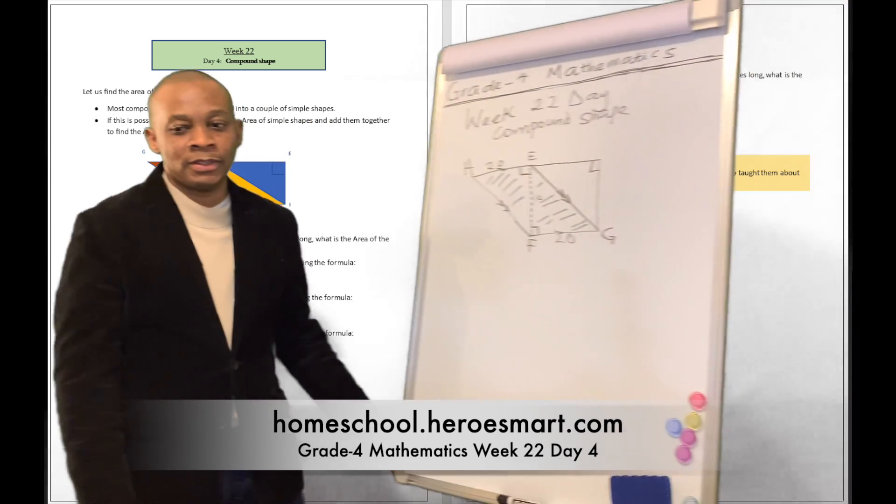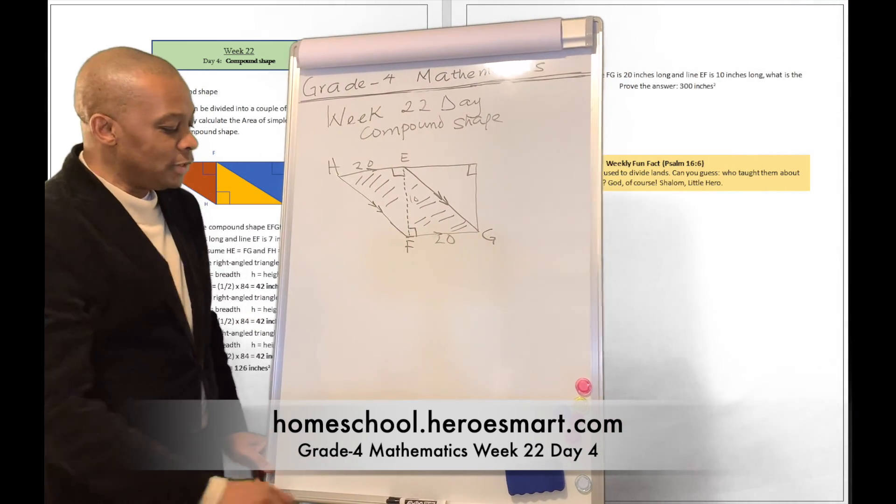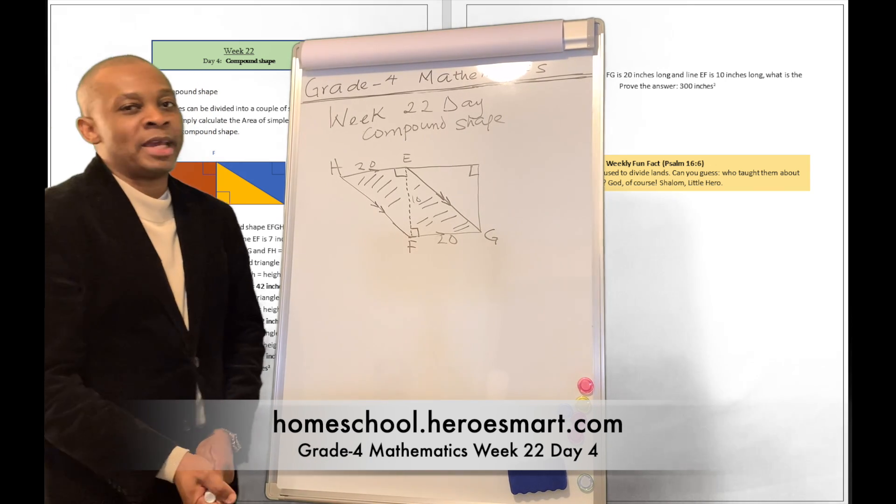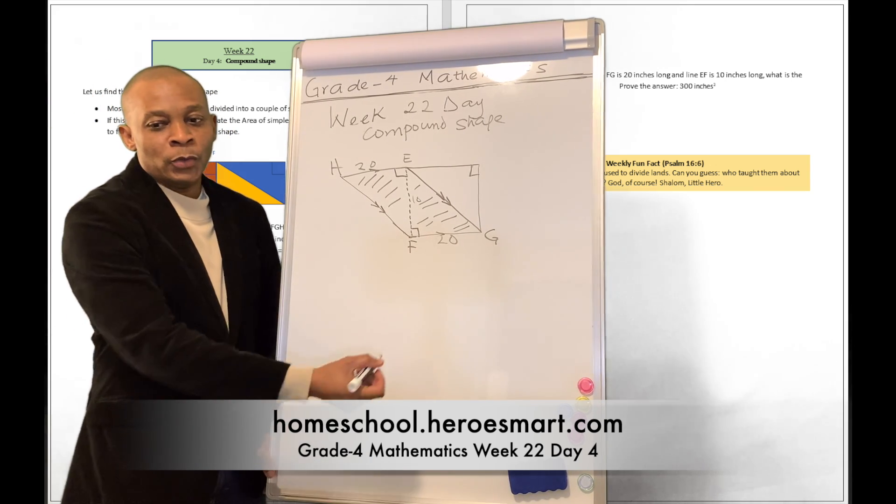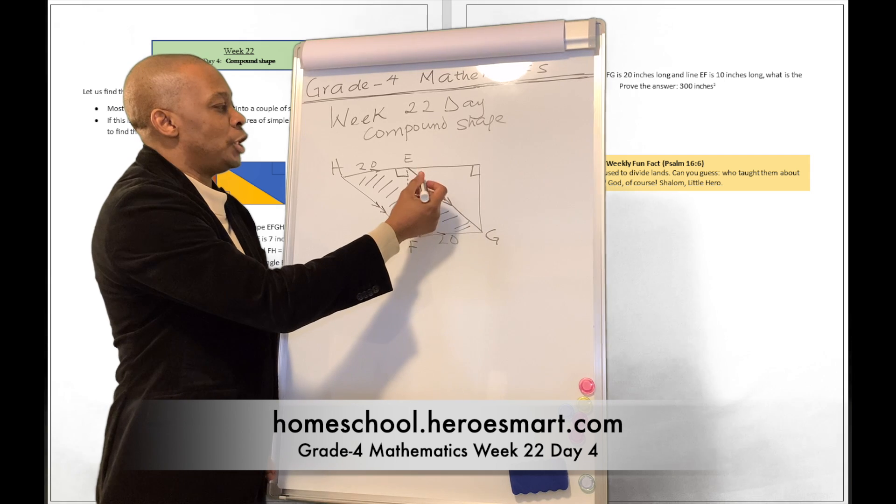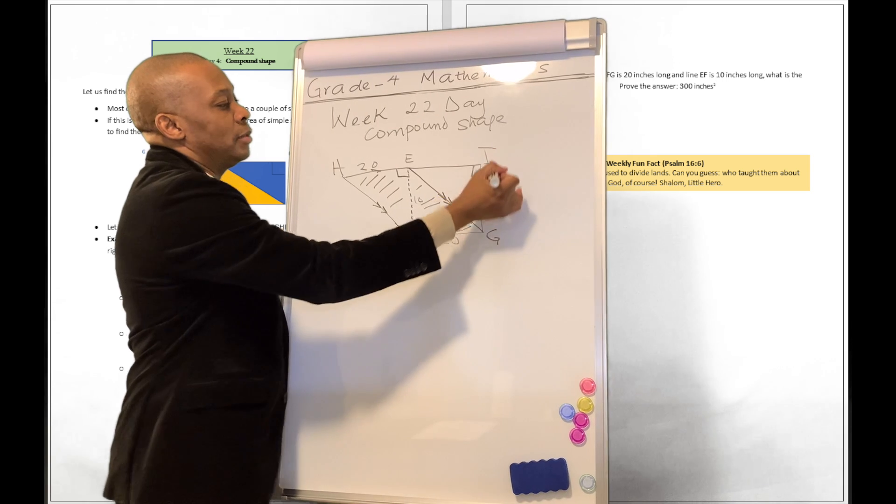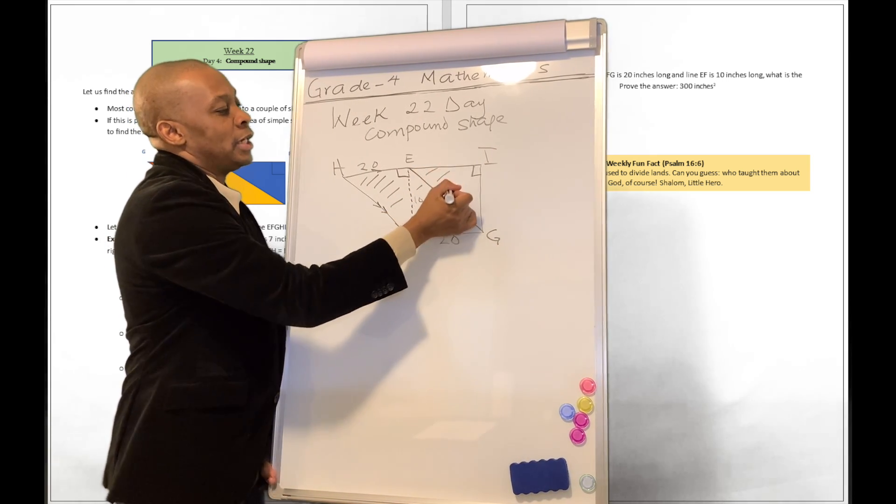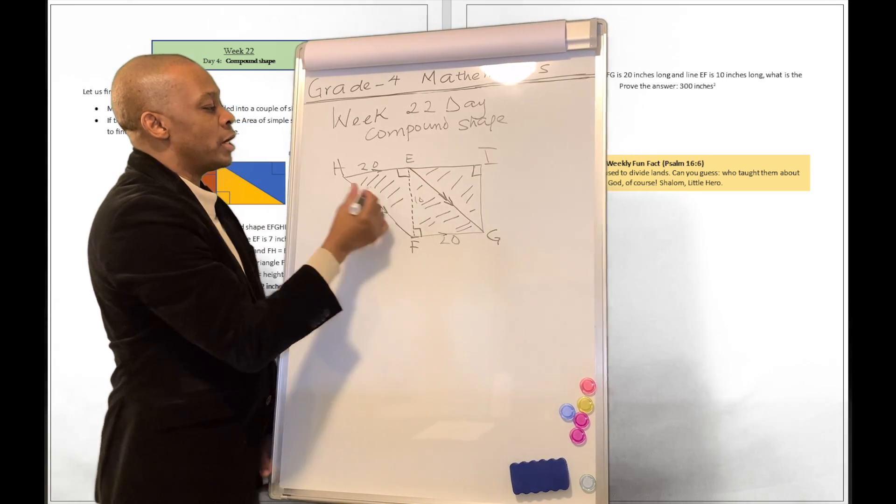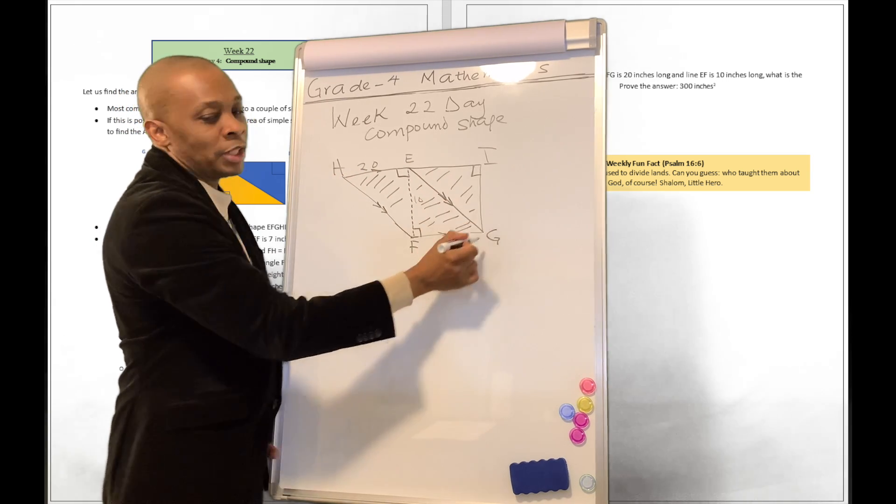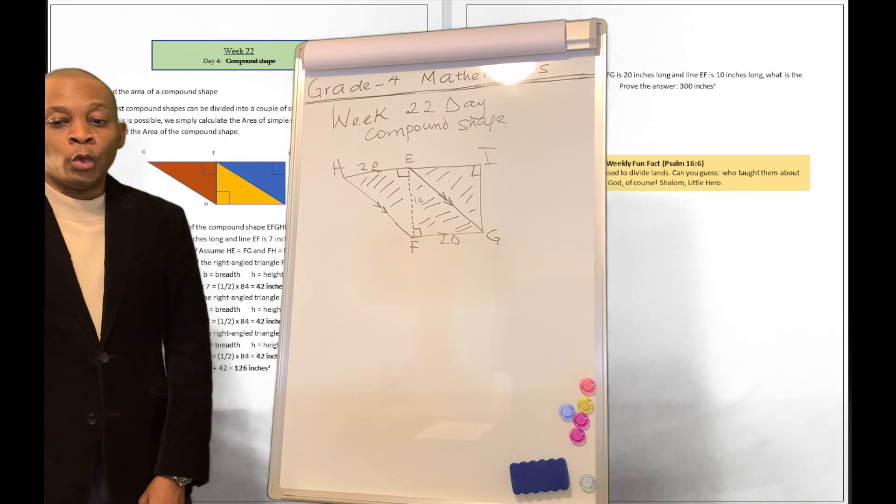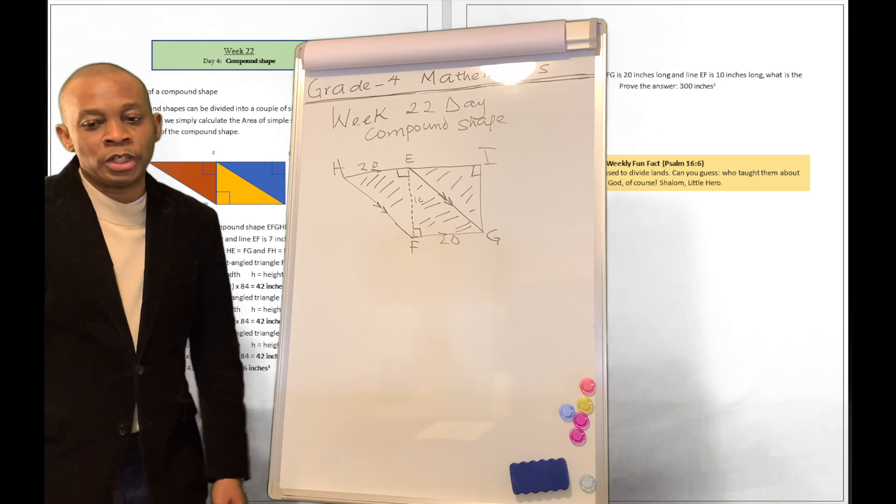Can you see this compound shape in here? This looks like a compound shape over there: E, F, G, H, maybe I or something like that. They're telling us what is the area of this compound shape. What's the area of the compound shape?